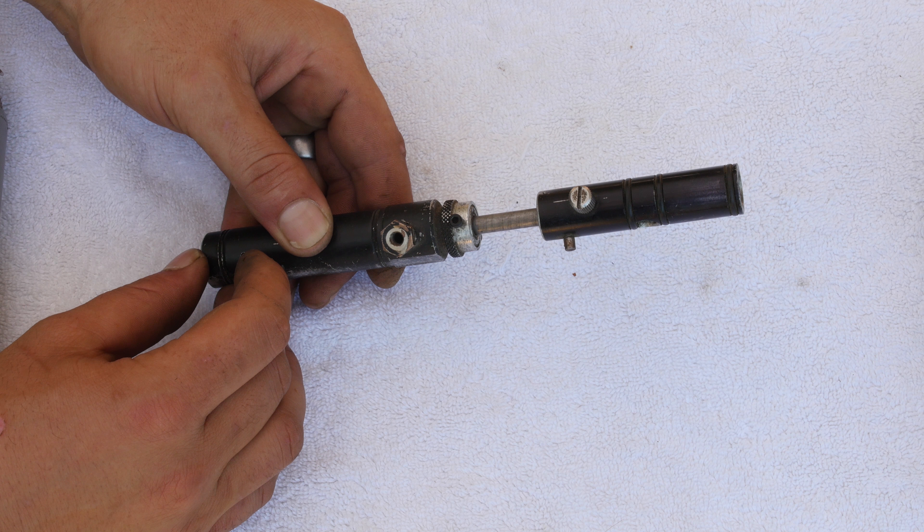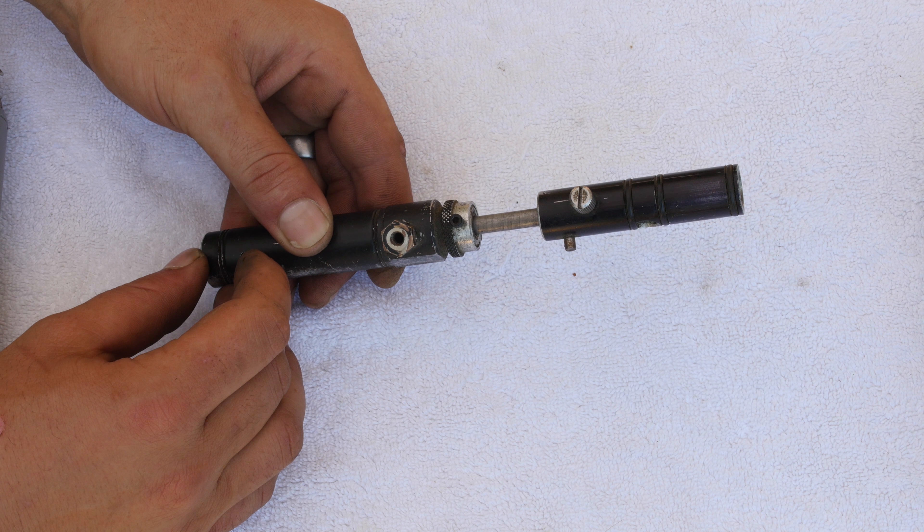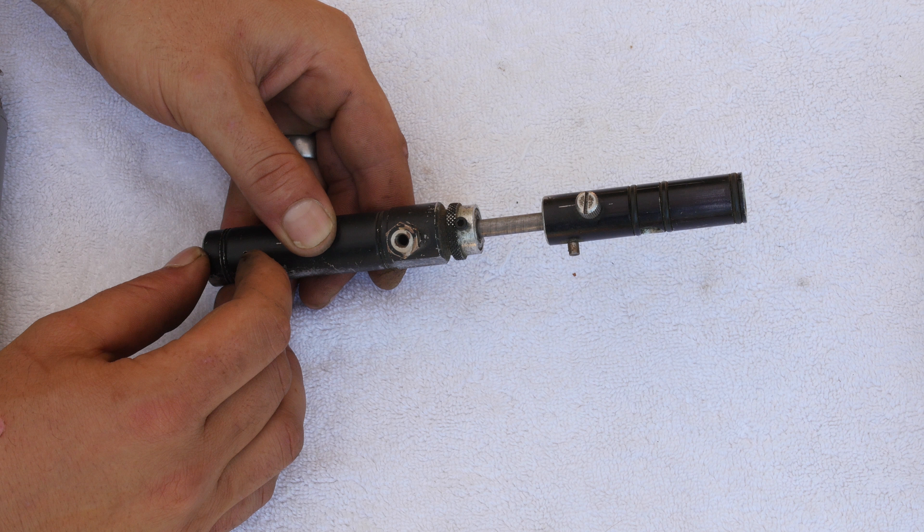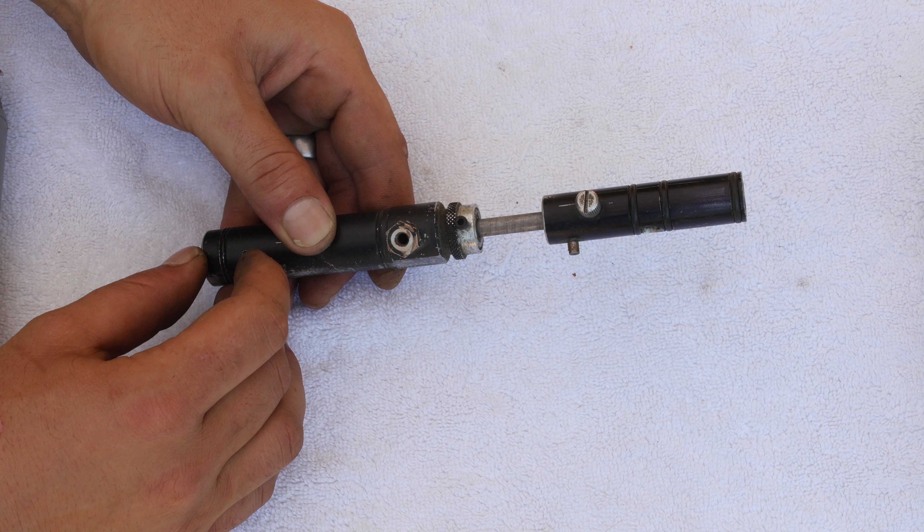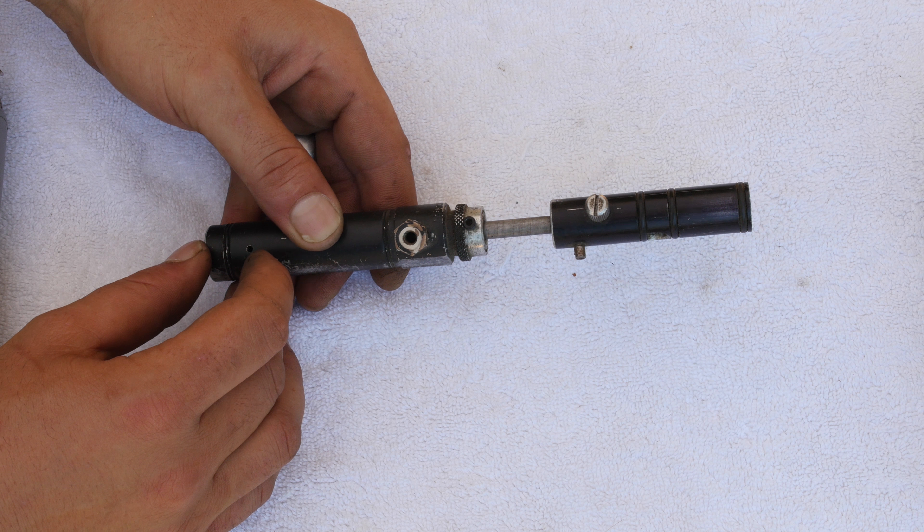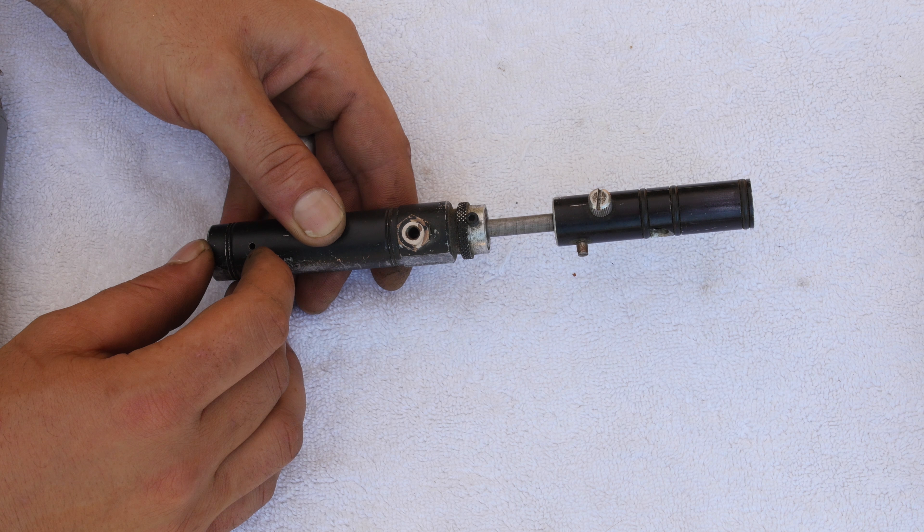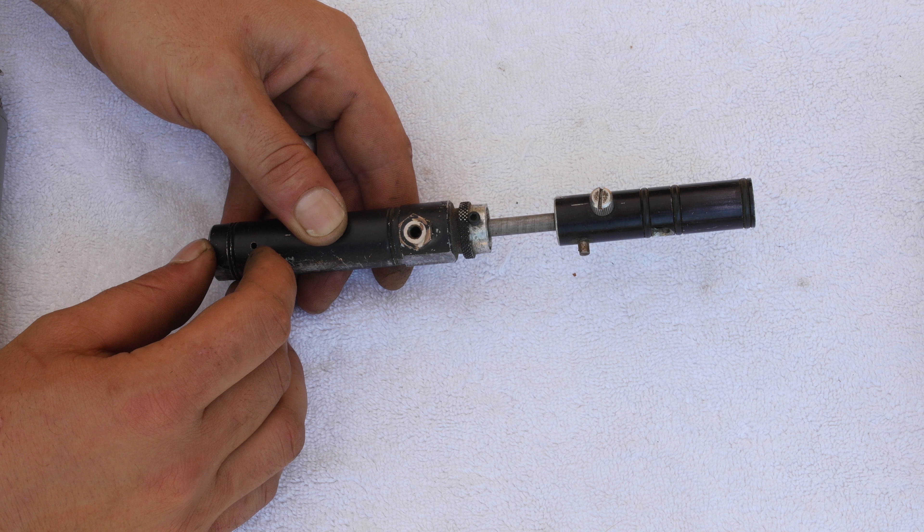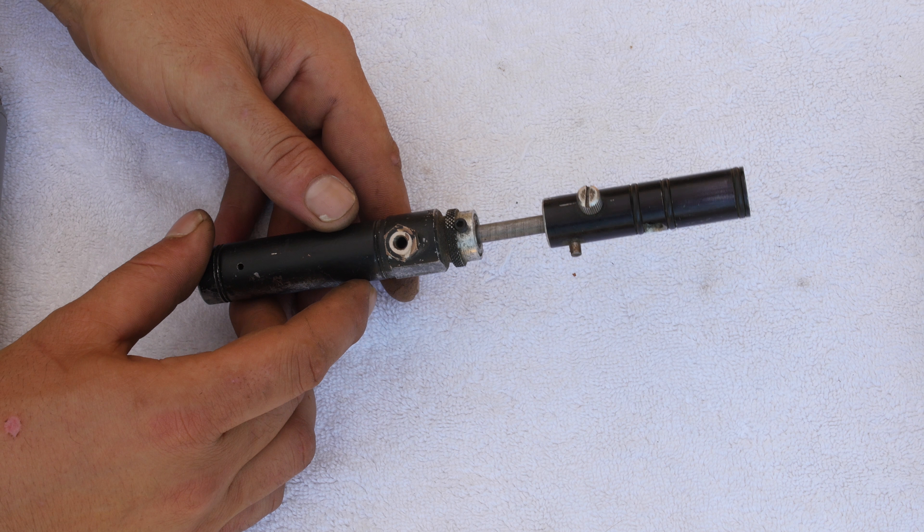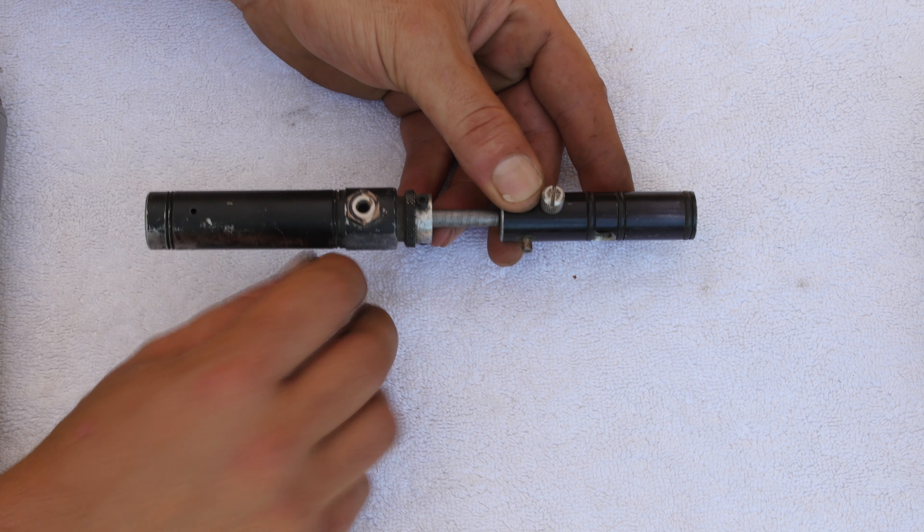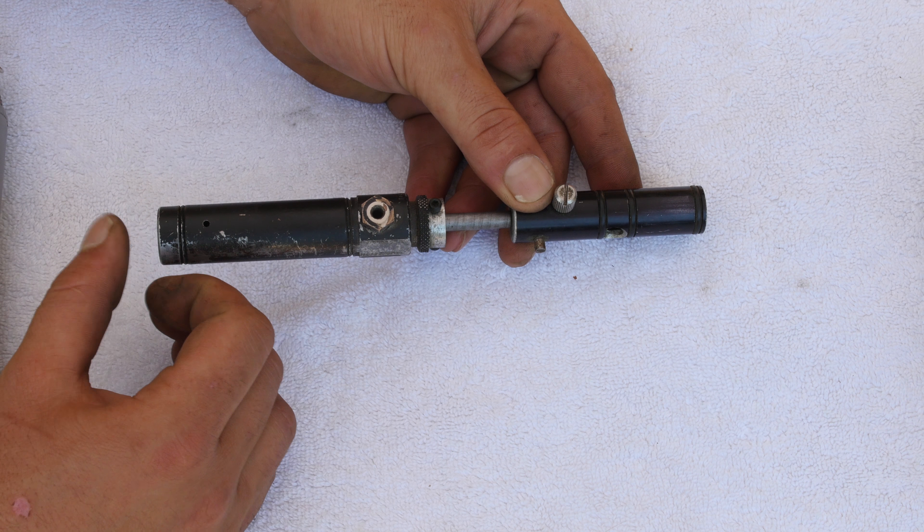And supposedly Glenn may have also incorporated that on some of his earliest rifles as well. I believe so. Yeah, I wasn't around too much when they were first doing the Hurricanes and the elite rifles and stuff like that. Yeah, and then they figured out how to flip the ram over and pressurize from the back side.